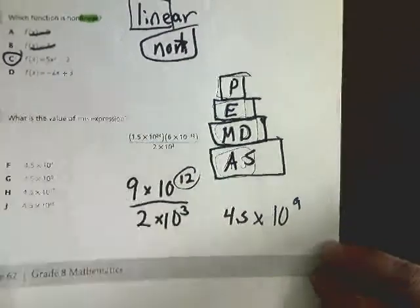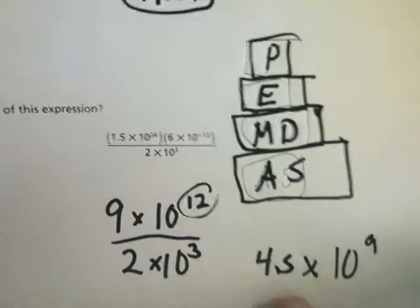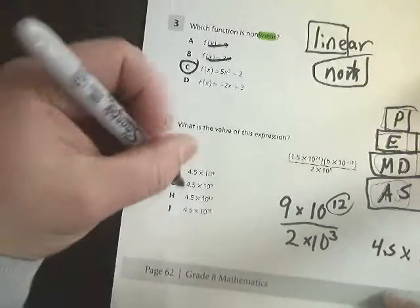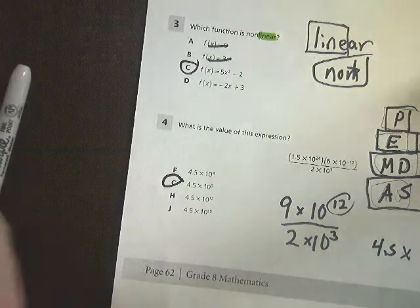Conveniently enough, this one already gives me the 4.5 form that I need. So I don't really have to change anything. I get G as the answer for number 4.